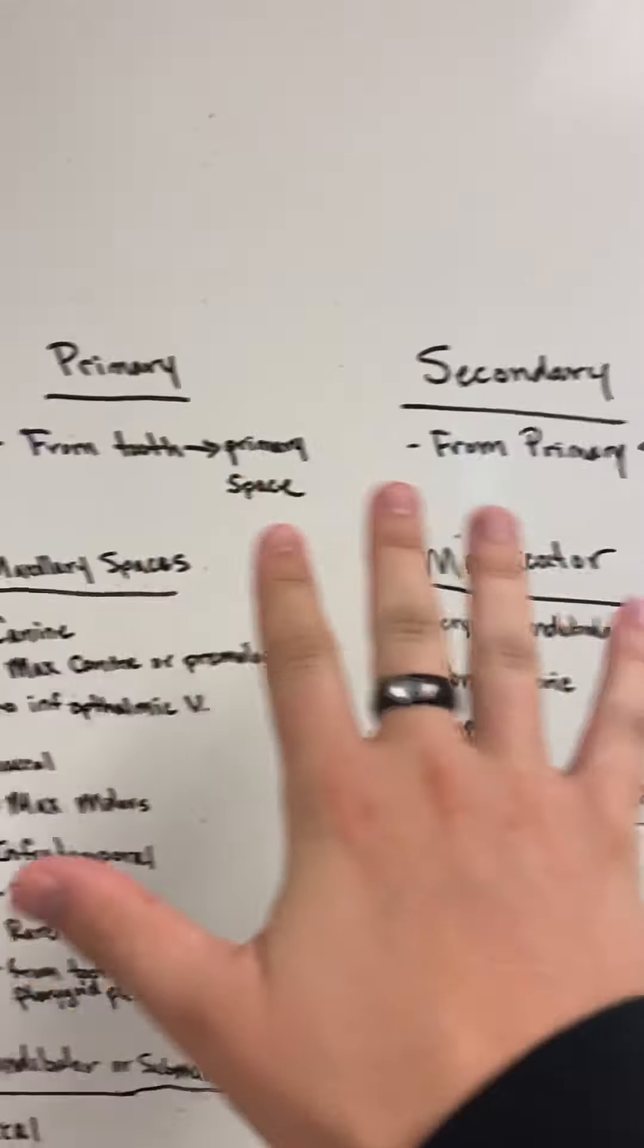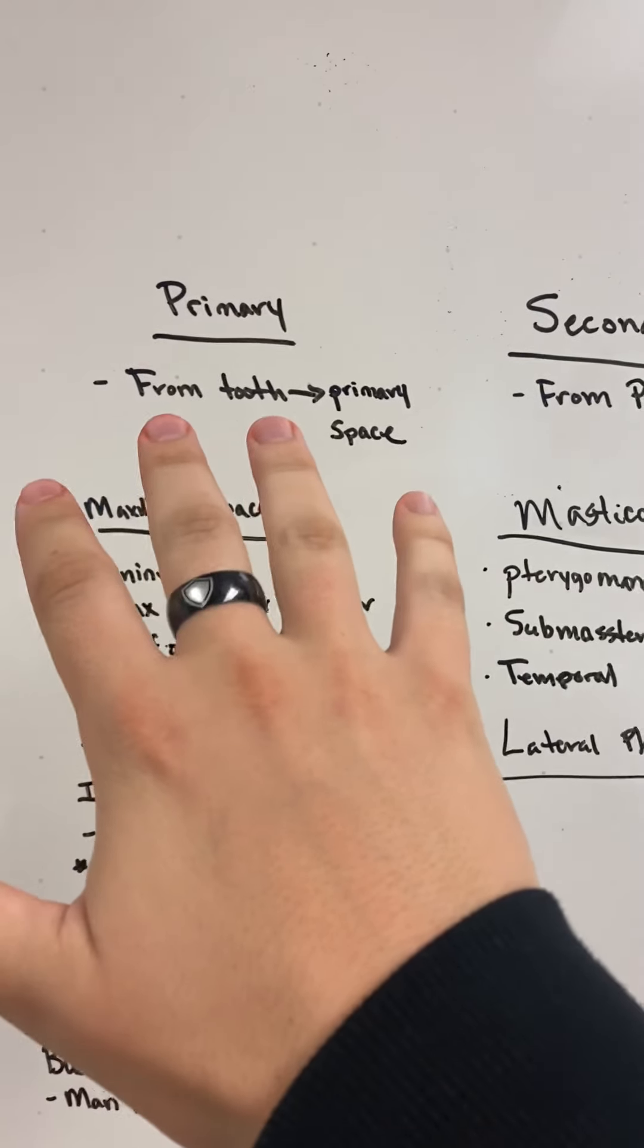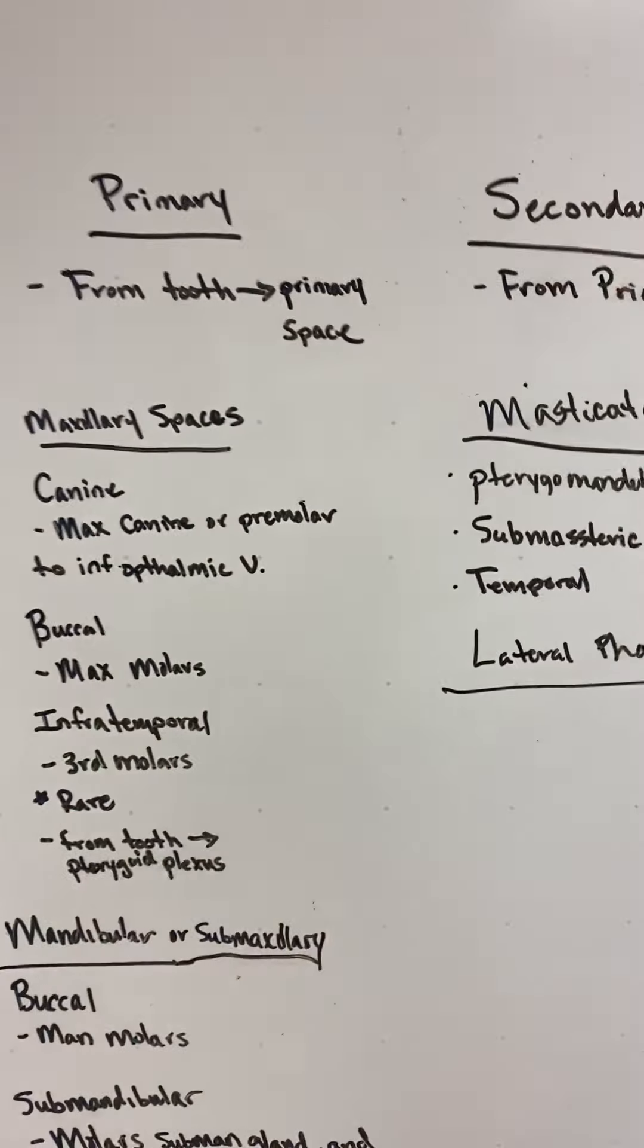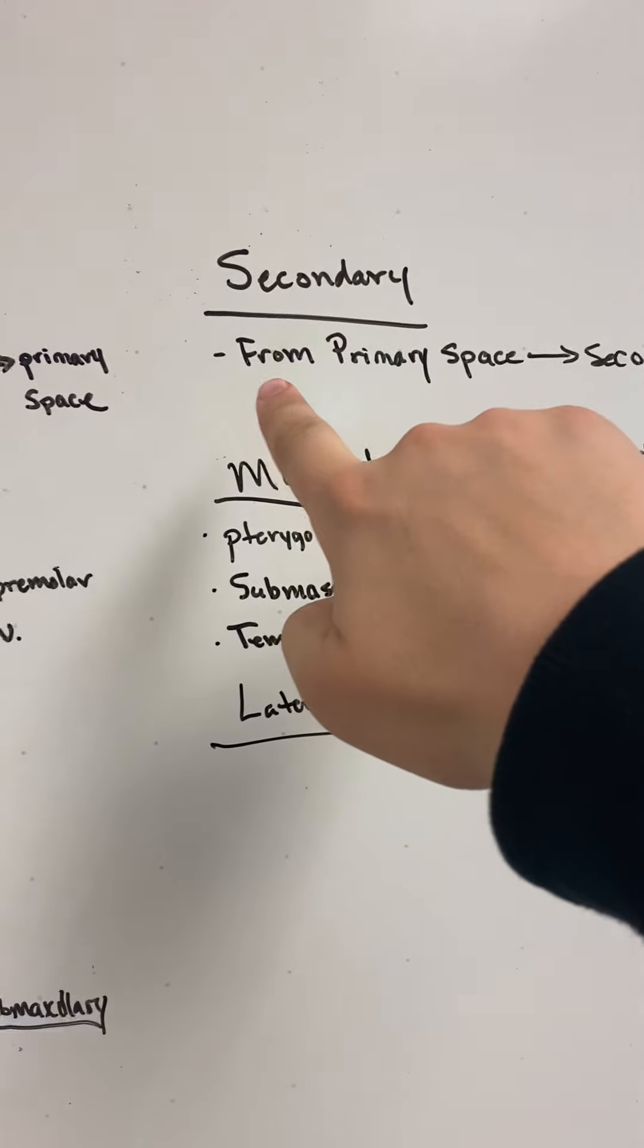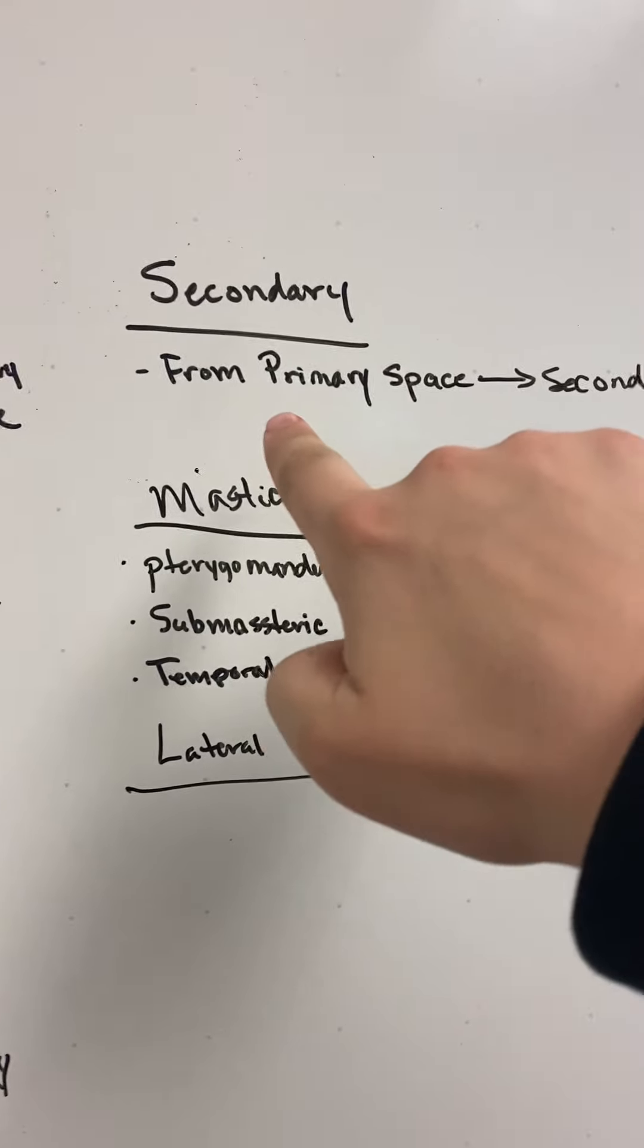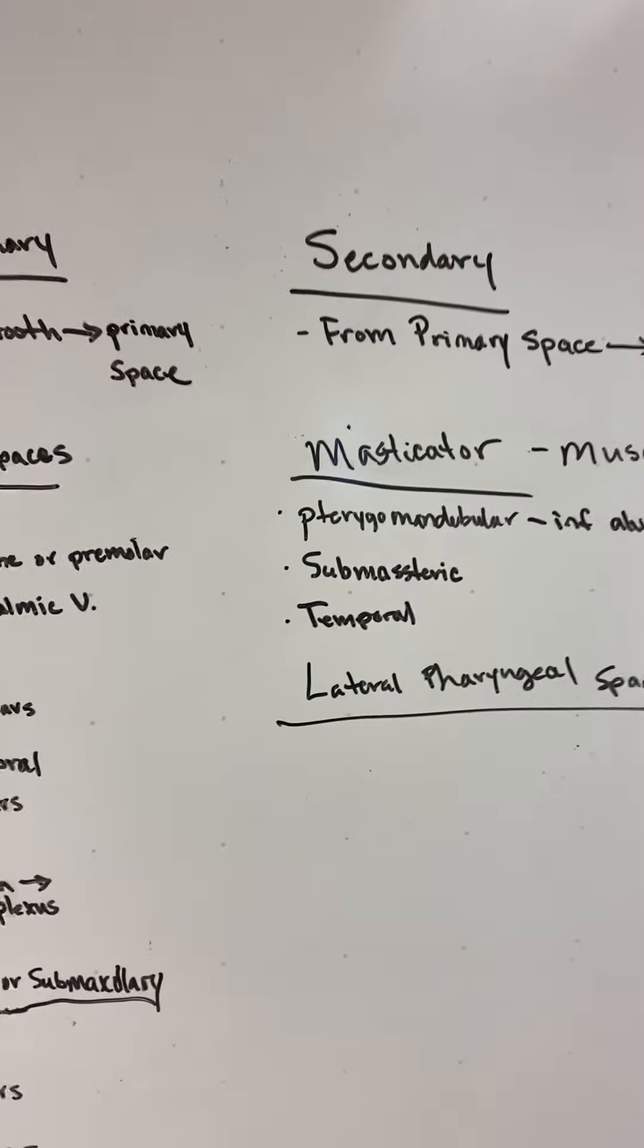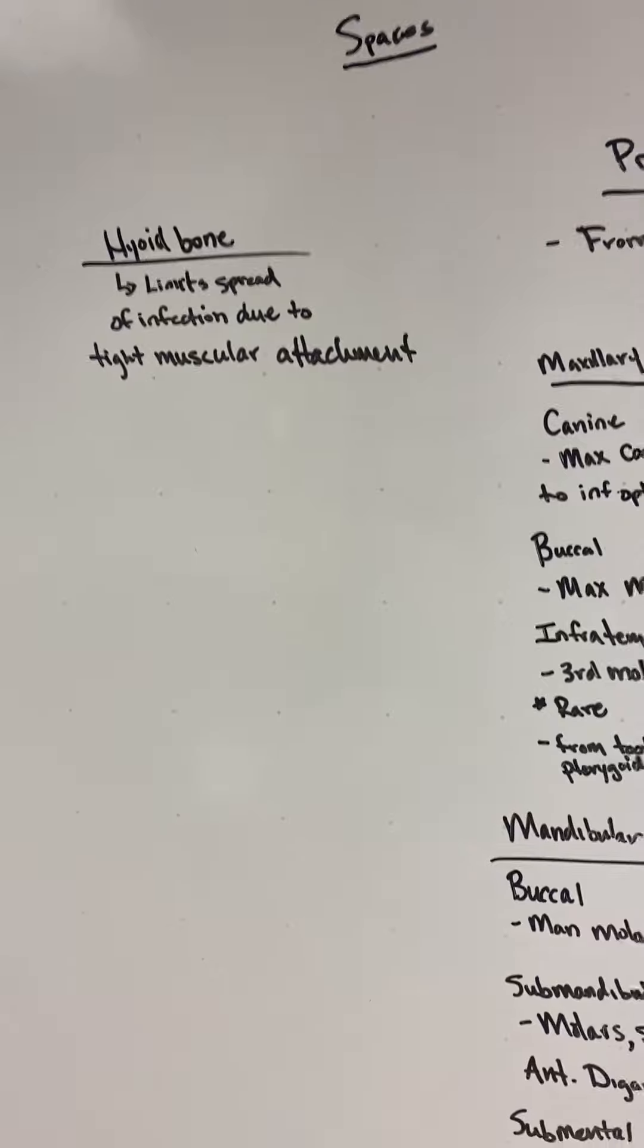So we have two main types: primary, that'd be like tooth or a main source, and then it goes into the space just adjacent to it. From that adjacent primary space, it will travel to a secondary space. I'm going to go over primary and secondary and talk about some other stuff.